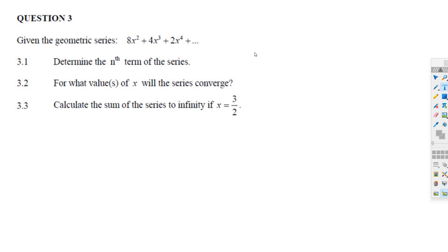x over 2. For the nth term, there's a formula for the nth term of a geometric series. The term Tn equals A times R to the n minus 1. So all you do, R is x over 2, the first term is 8x squared. So Tn equals A times R to the n minus 1. That's your answer.